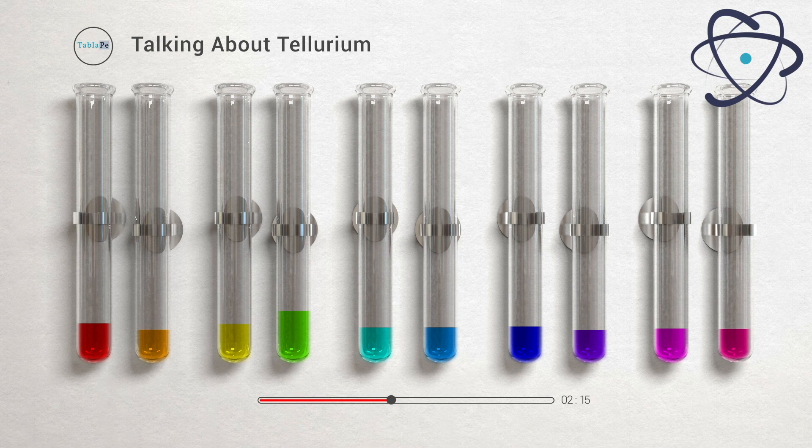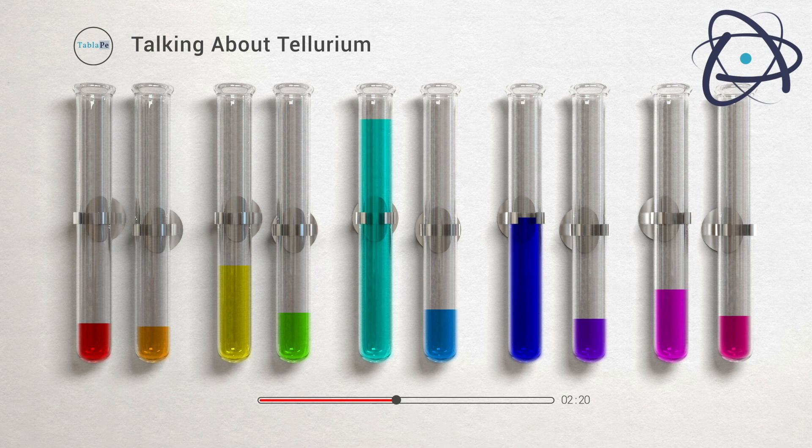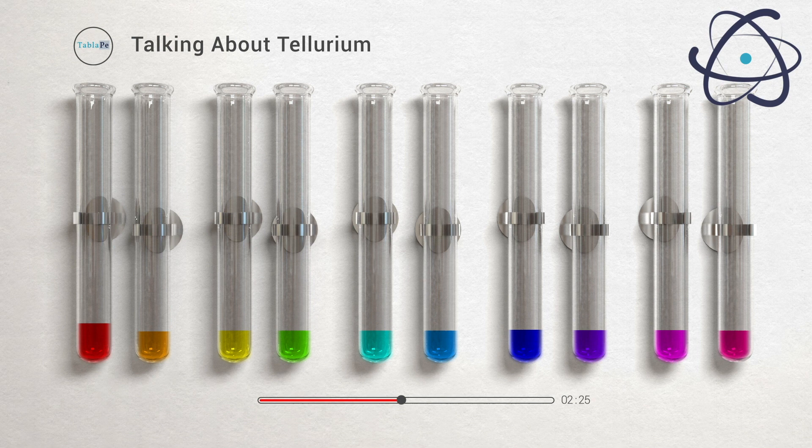Tellurium is rare and its abundance on earth is less than one part in a billion. Specifically, tellurium is found in the ores of lead, silver, copper, and bismuth. Tellurium is a silver-white element, usually available as dark gray powder.